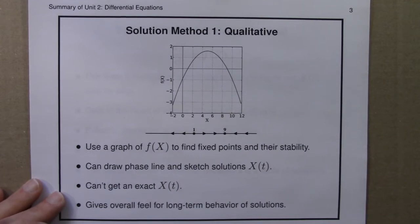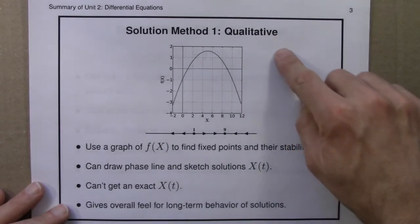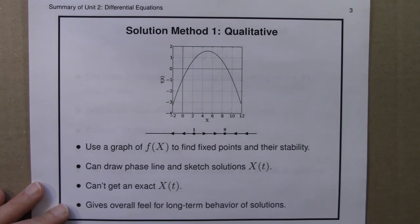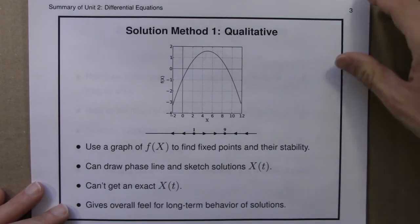We can't, however, get an exact form for x. We don't necessarily know how fast the solutions go. But this method is good for giving an overall feel for the long-term behavior of solutions. Where do orbits go? How many fixed points are there? And what are their stabilities?